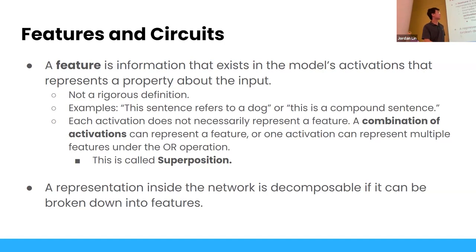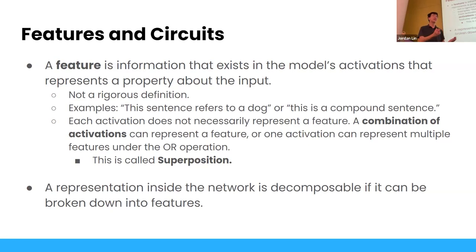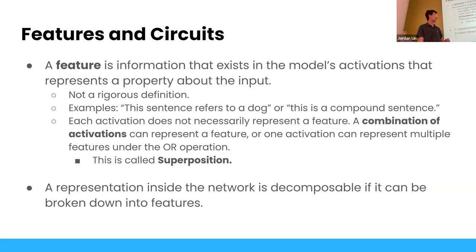One activation can result in multiple features — for example, a single neuron lighting up for both a dog and a car. This is called polysemanticity. It happens because if the network never sees a dog and a car in the same image, it'll never get confused about them, so it can use the same neuron for two purposes, increasing its representational capacity.